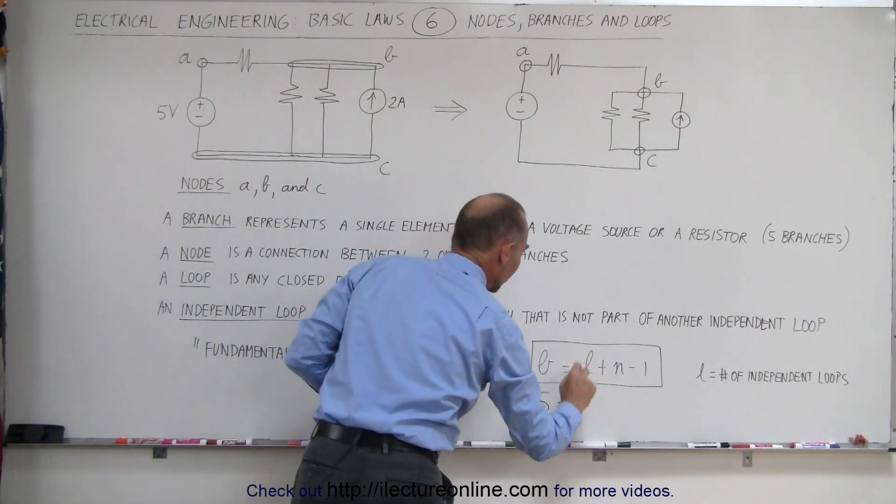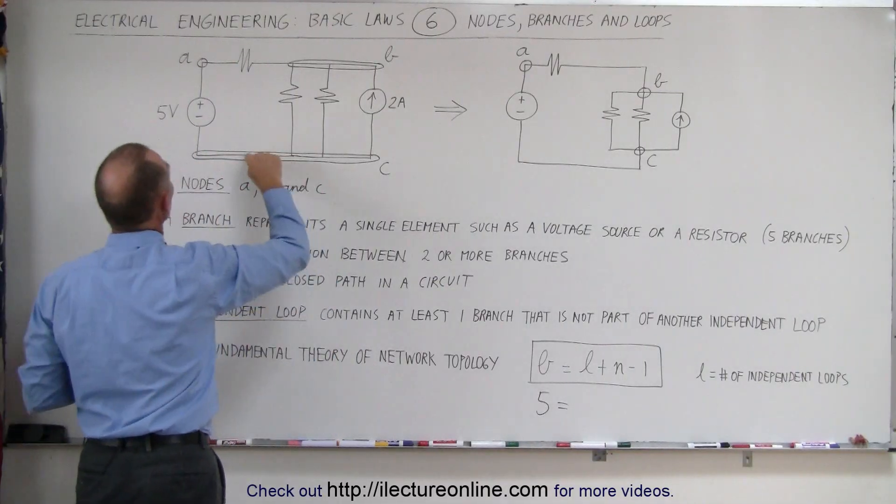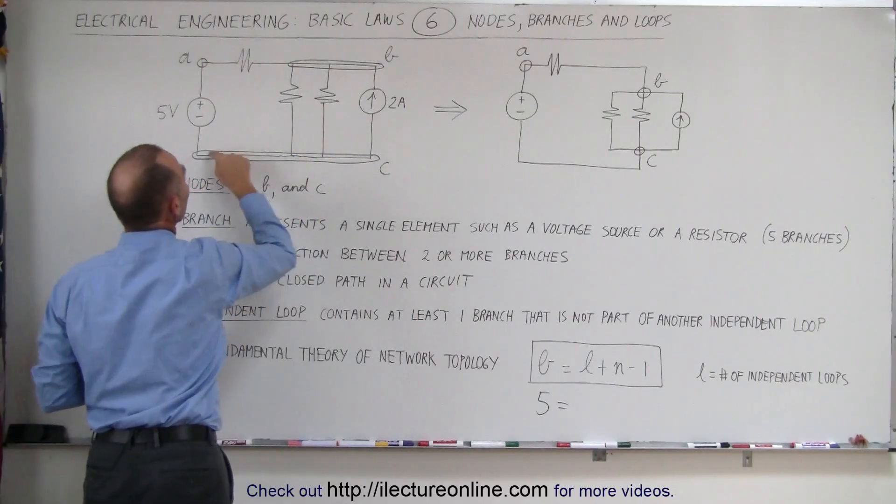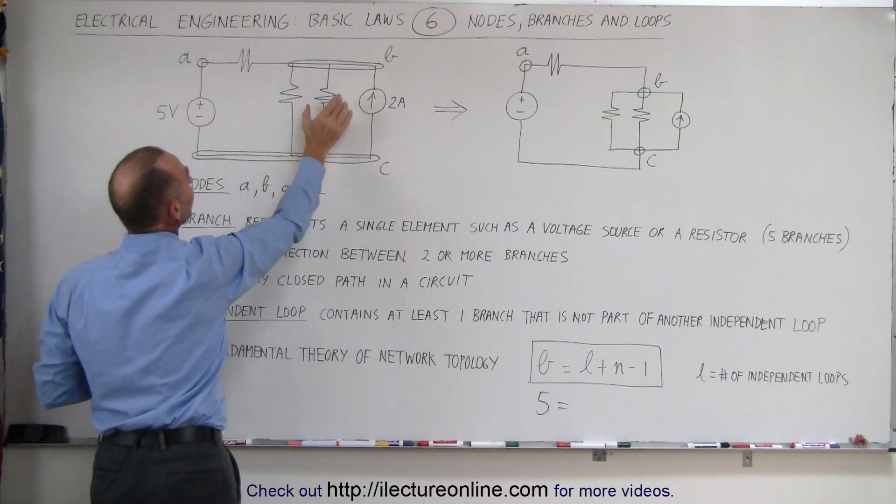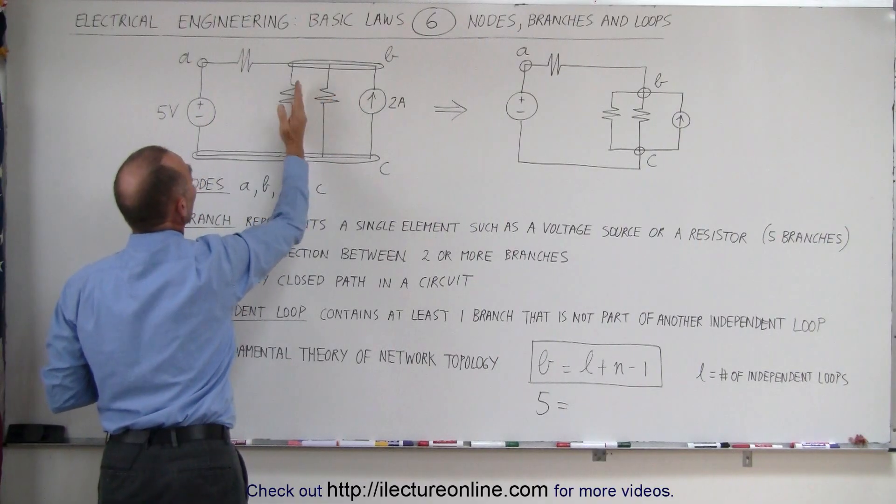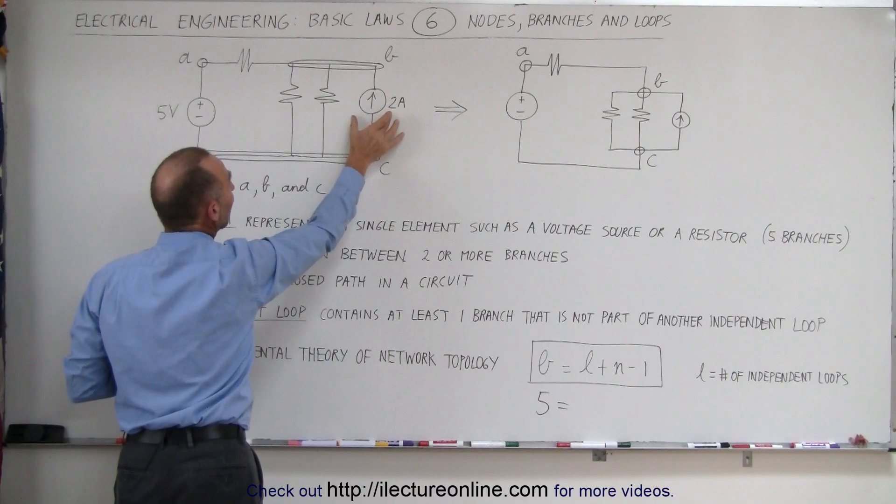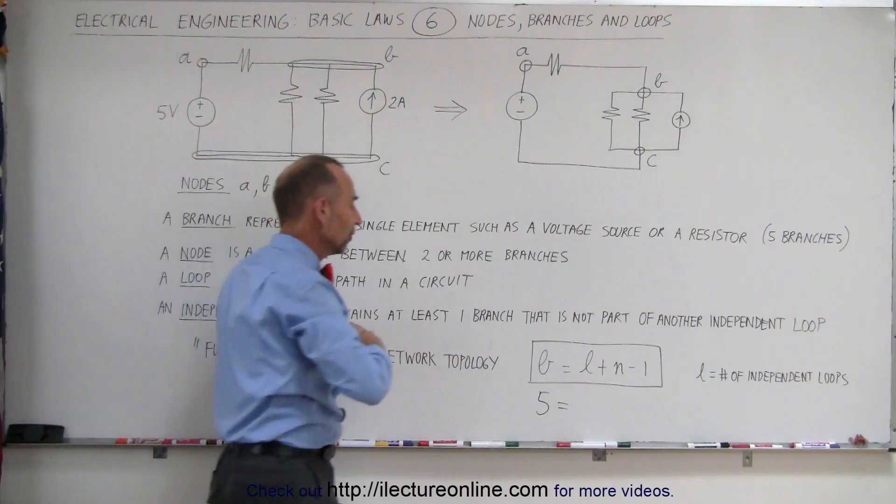Five is equal to L. L is the number of independent loops. We have one loop here. We have a second loop there, and we have a third loop. Notice that the second loop contains this branch that's not contained in the first loop, and the third loop contains this branch which is not contained in the second or the first loop. Therefore there are three independent loops.